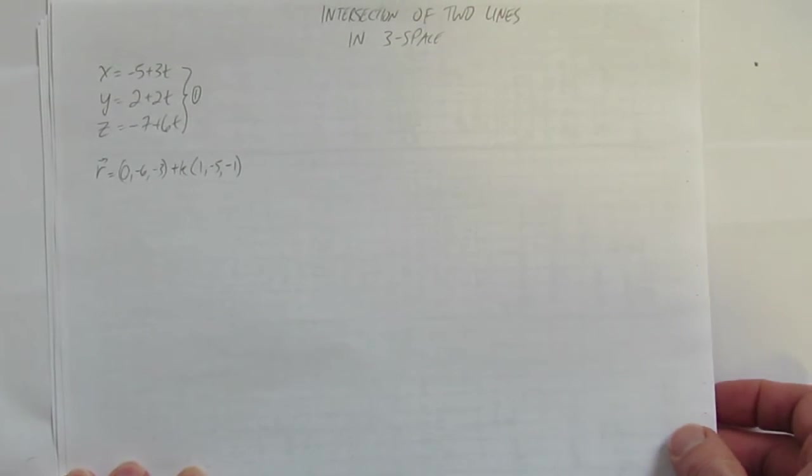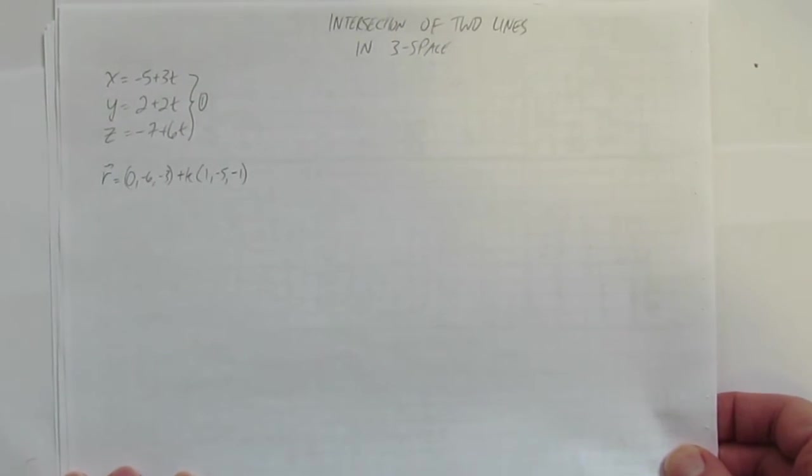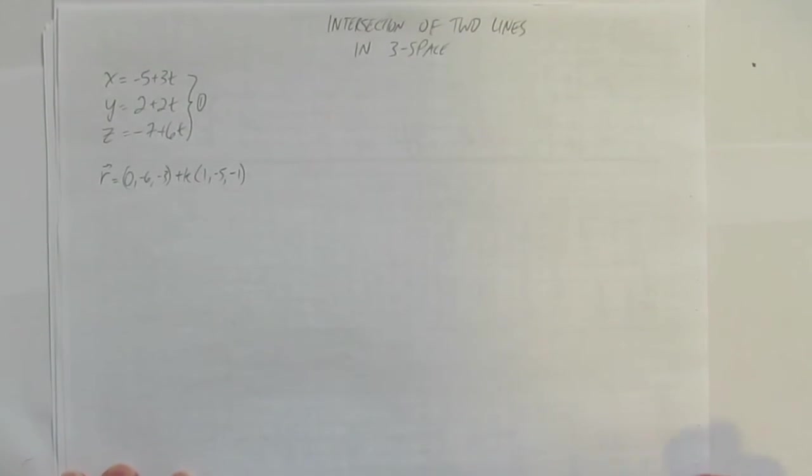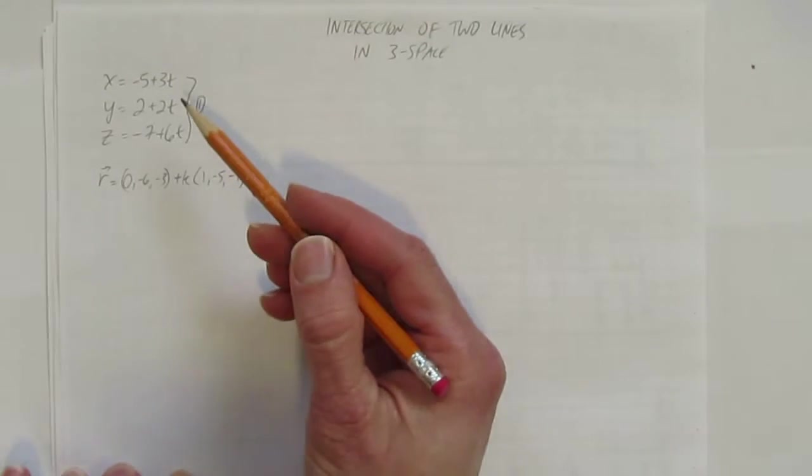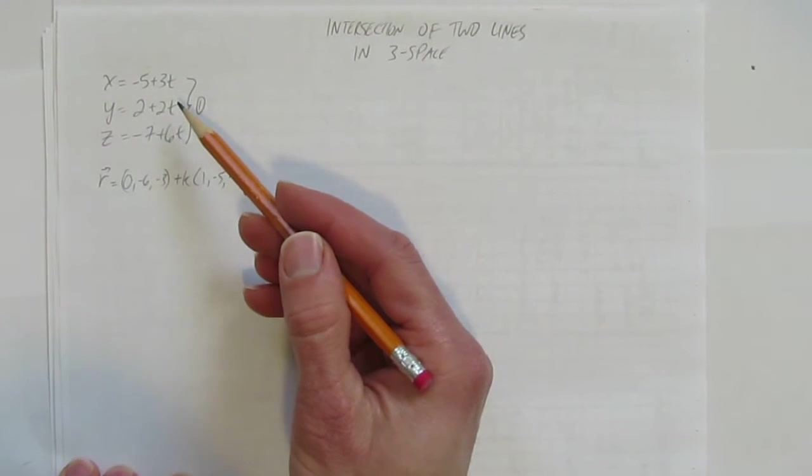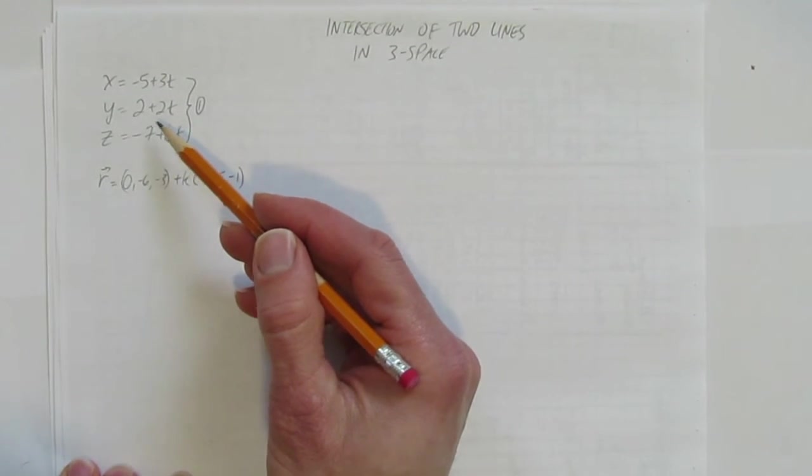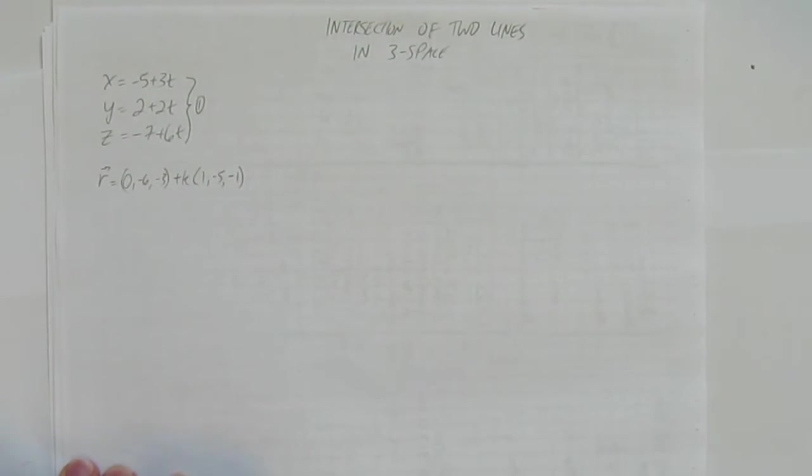In this video, we'll look at the intersection of two lines in three space. So you're given two lines. The first equation is x equals negative 5 plus 3t, the second is y equals 2 plus 2t, and the third is z equals negative 7 plus 6t.